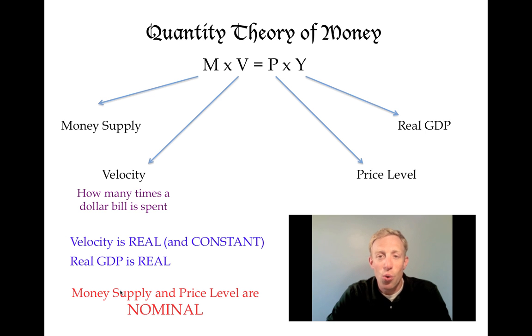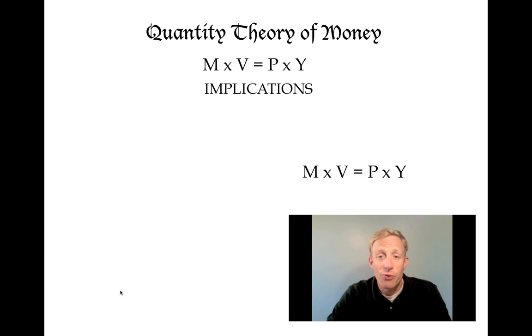The quantity theory of money has two primary implications. The first says that if the money supply goes up and velocity is held constant, one of two things must happen: either GDP has to go up, the Y part of our equation, or the price level has to go up.